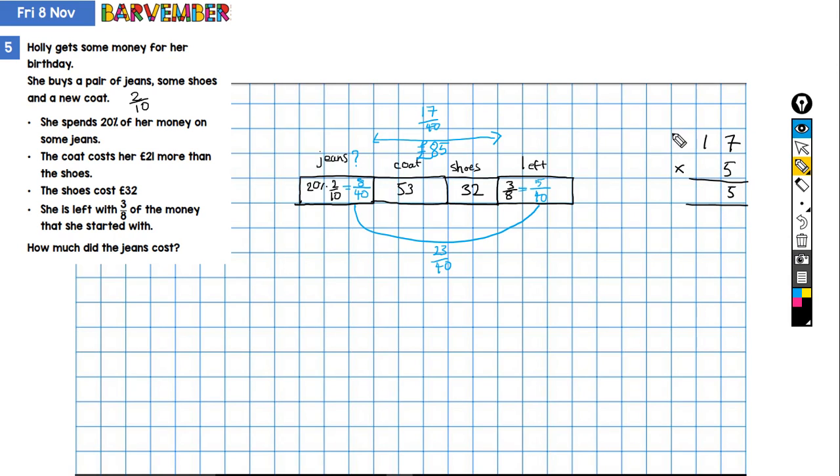So thirty-five. Right. Yes. So we've checked. So seventeen times five is eighty-five. So we now know that one fortieth equals five.